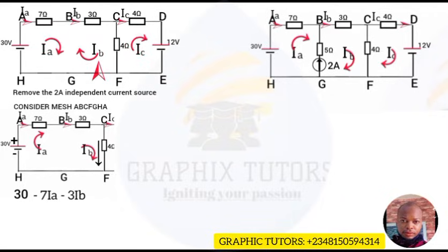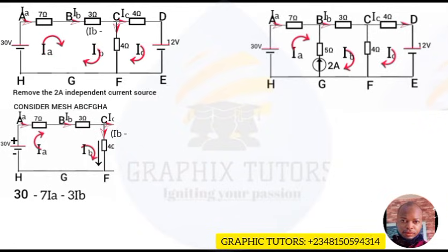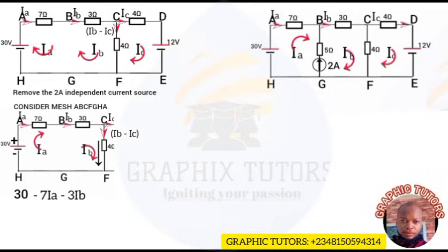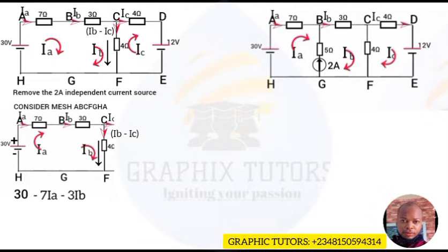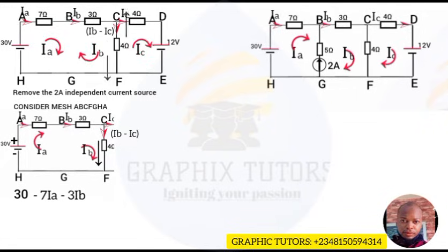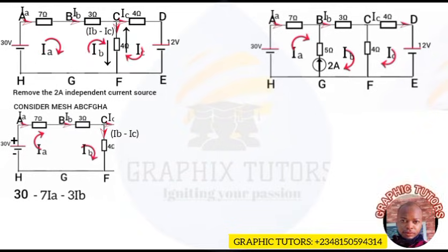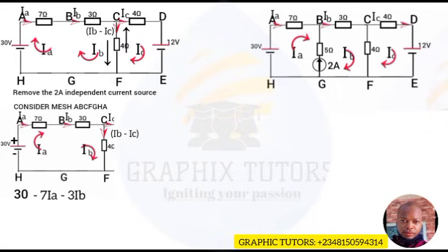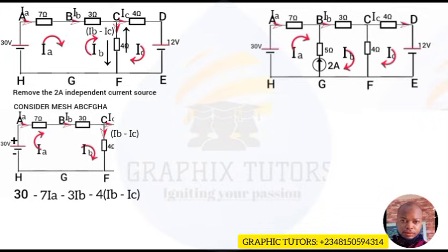Part c-f separates mesh ib and mesh ic. Since mesh ib goes clockwise downward and mesh ic goes upward, the two currents oppose each other, so there is a subtraction. Working in the ib domain, the current is ib minus ic, multiplied by the 4-ohm resistor, giving −4(ib − ic). This voltage drop equals zero, completing the KVL equation: 30 − 7ia − 3ib − 4(ib − ic) = 0.